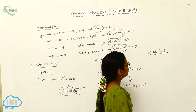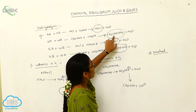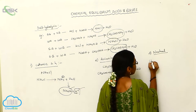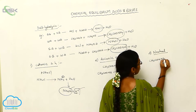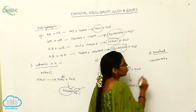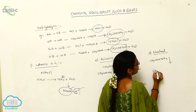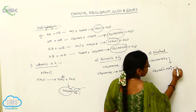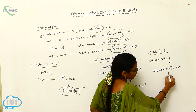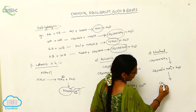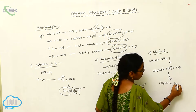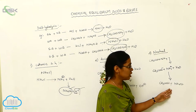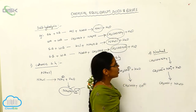The third type is neutral salt hydrolysis. For neutral salt hydrolysis, I am taking ammonium acetate, CH3COONH4. It gives CH3COO⁻ and NH4+ ions. On hydrolysis with water, the H+ ion reacts with the acetate ion forming acetic acid, and the OH⁻ reacts with NH4+ forming ammonium hydroxide. Since no net cation or anion is produced, it is called neutral salt hydrolysis.